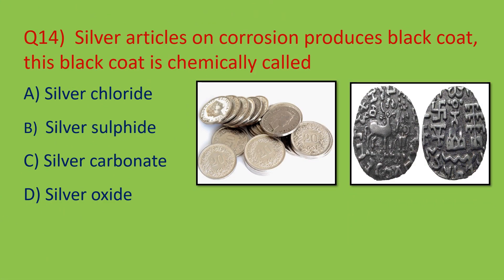Question number fourteen: silver articles on corrosion produce a black coat. What is this black coat chemically called? Silver coins turn black because silver metal reacts with sulfur compounds present in the atmosphere, producing silver sulfide, which is black in color. The coat formed on silver articles is silver sulfide. Option B is the right answer.